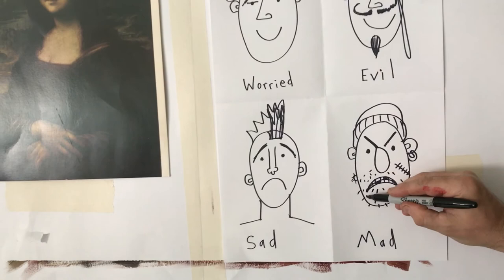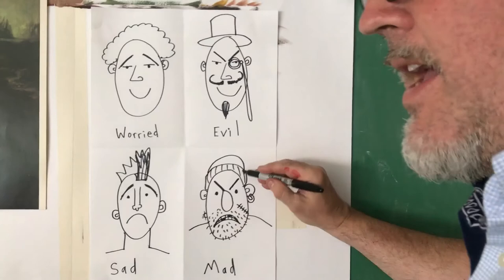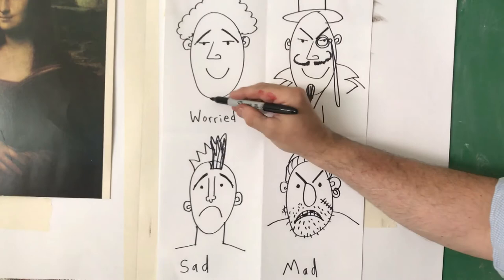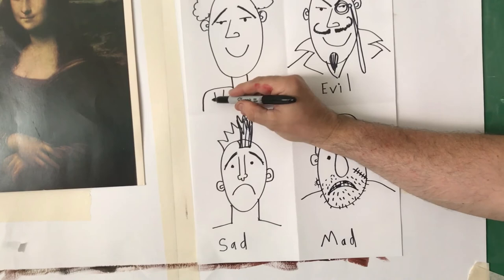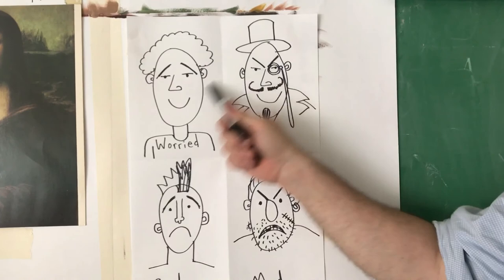You don't have to copy these faces exactly. I want you to create four very different-looking faces. Give them whatever kind of hat or features you want — this guy has no neck, this guy would have a pointy suit. If you need ideas, don't be afraid to search the internet. The key is to use the eyebrow trick to get four different expressions. Good luck!